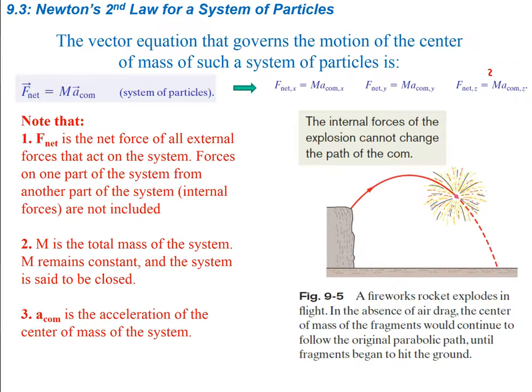Now let's move on to Newton's second law for a system of particles. The vector equation governing the motion of the center of mass is simply: the sum of forces equals the total mass times the acceleration of the center of mass. Breaking it into components — in the x direction, it's total mass times ax_com; in the y direction, total mass times ay_com; and same for z. The net force is the net of all external forces; internal forces between particles cancel out.